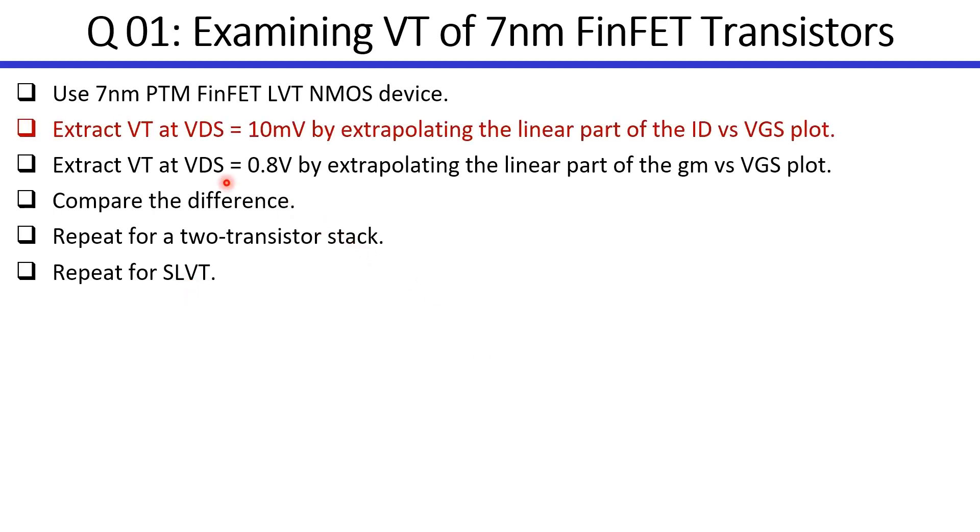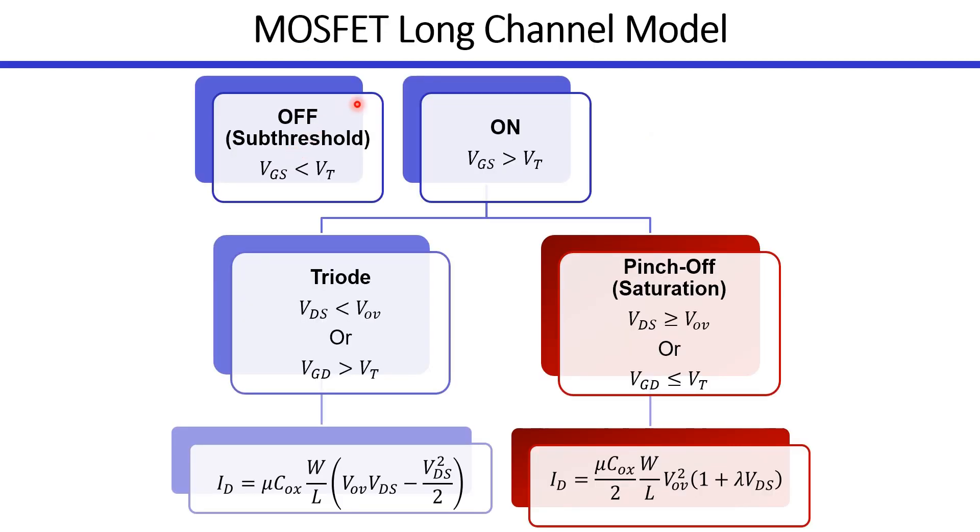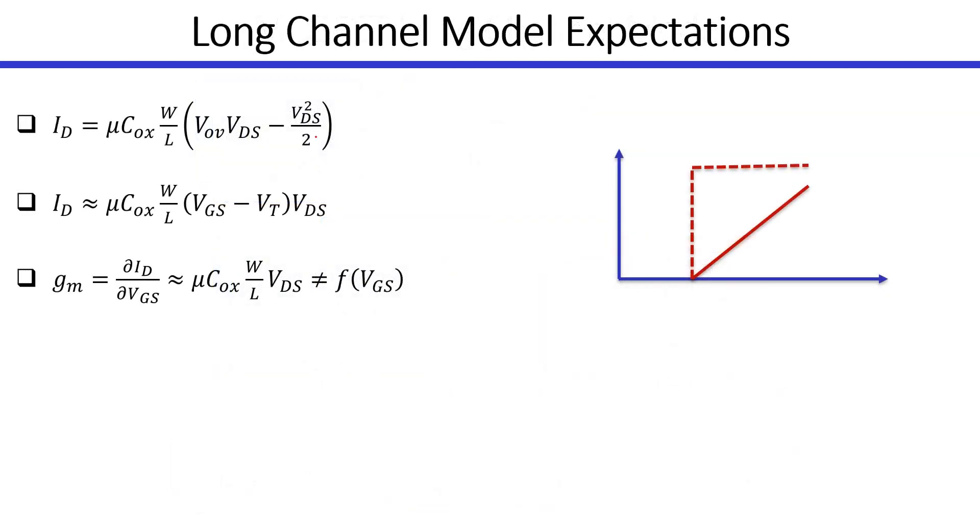Let's start with the first part where we'll extract VTE at a VDS of 10mV. As a quick review, this is the MOSFET long channel model. As we have a small VDS of 10mV, we'll be operating in the triode region and the drain current will be given by this equation. So this is the triode equation.